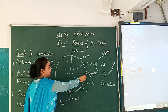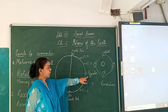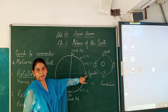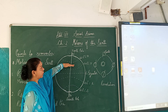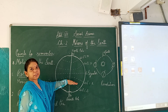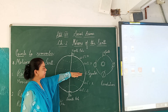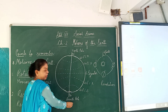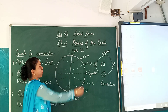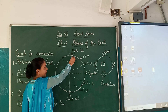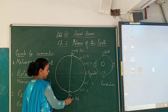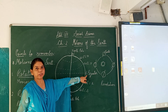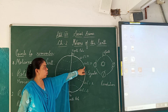We have zero degree, which is the equator. The equator is that imaginary line which divides the north pole and the south pole — it divides the earth into two parts. The poles are at 90 degree north and 90 degree south. So we have the equator at zero degree.